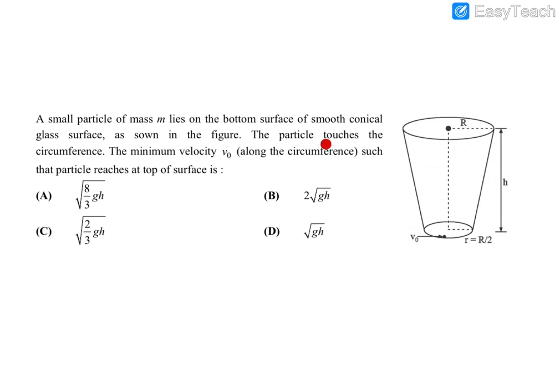The particle touches the circumference. The minimum velocity v naught along the circumference such that the particle reaches at the top of the surface is - so four options are given and you have to catch the right option. The particle is thrown along the circumference.